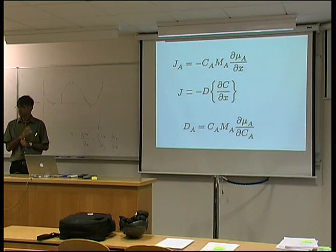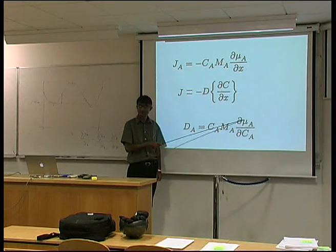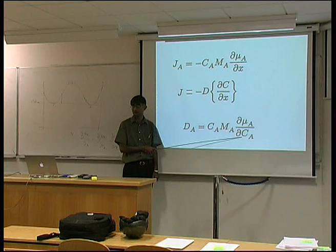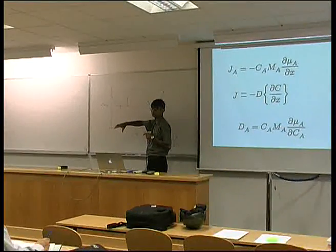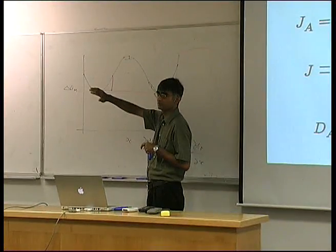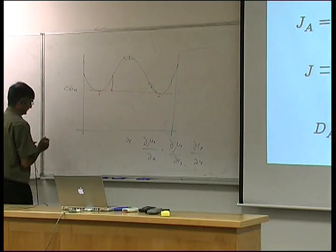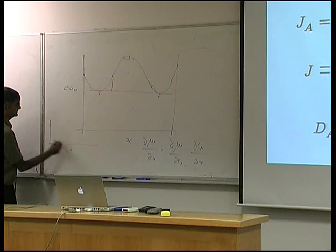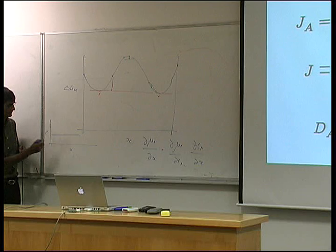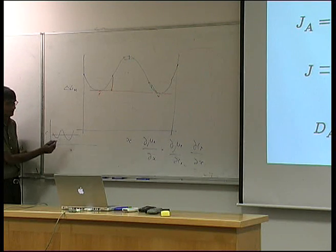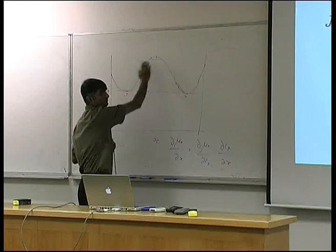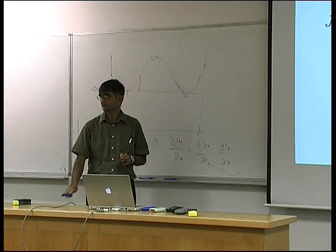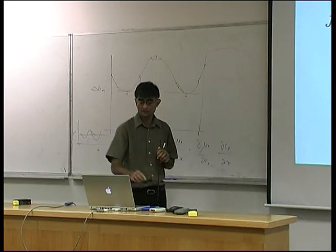This springs into interesting scenarios - if the chemical potential decreases when the concentration increases, then the sign of the diffusion coefficient will be negative. So here, if a homogeneous solution tends to split into an inhomogeneous solution, that means diffusion is happening up a concentration gradient. We start with a homogeneous material and develop a composition wave, which necessarily means that solute is going up a concentration gradient.